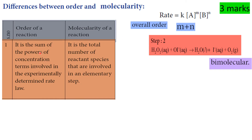First point — order is the sum of the powers of the concentration terms involved in the experimentally determined rate law. In the rate law, the concentration terms have powers m plus n — that is the order. Molecularity is the total number of reactant species involved in an elementary step, where many molecules are involved.